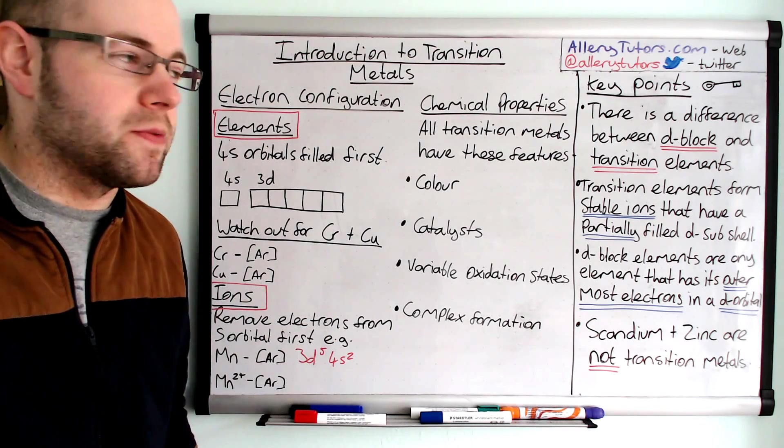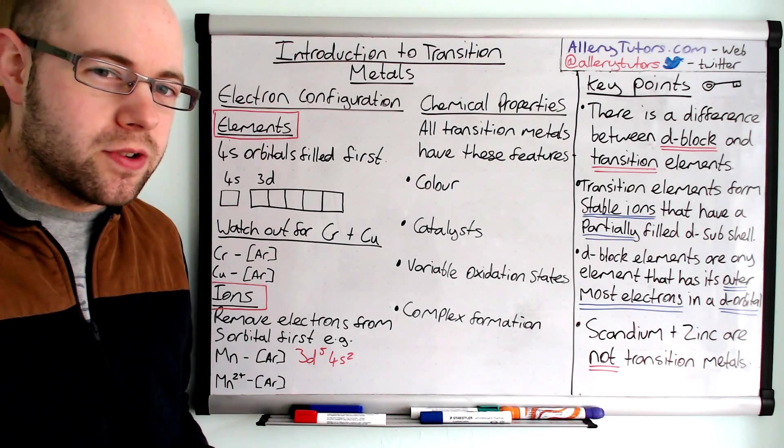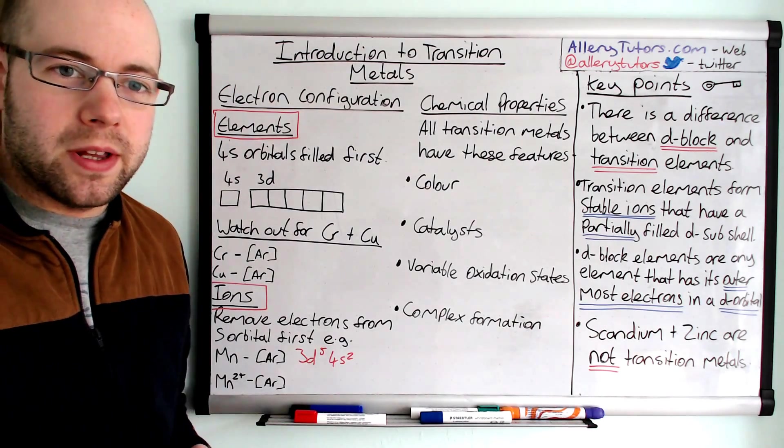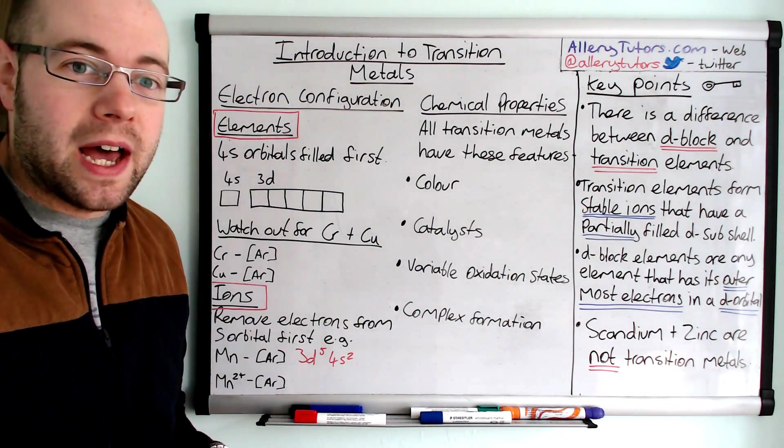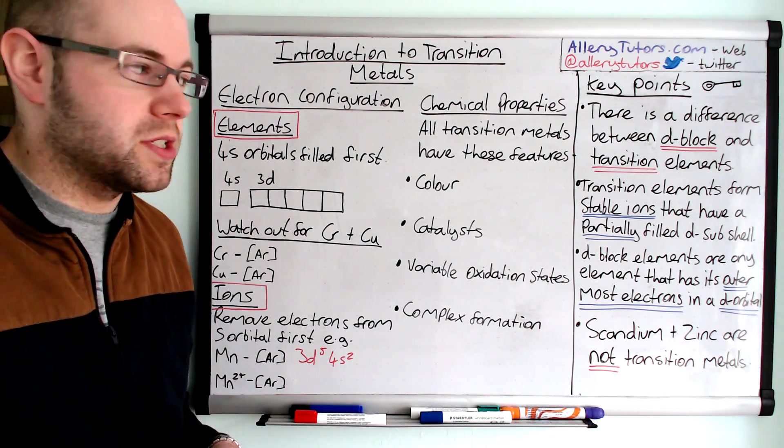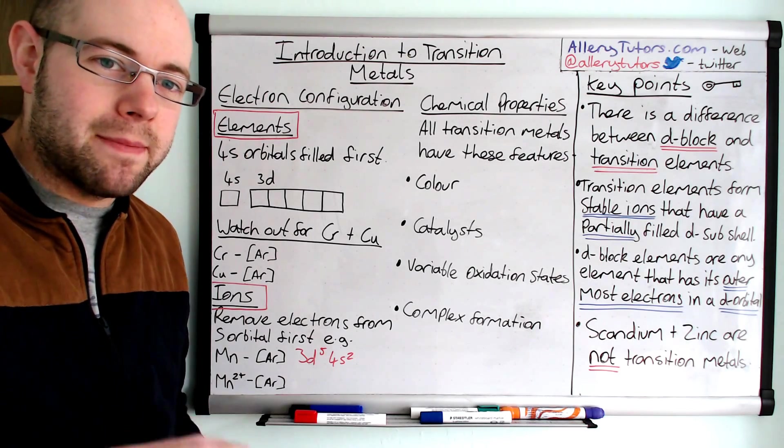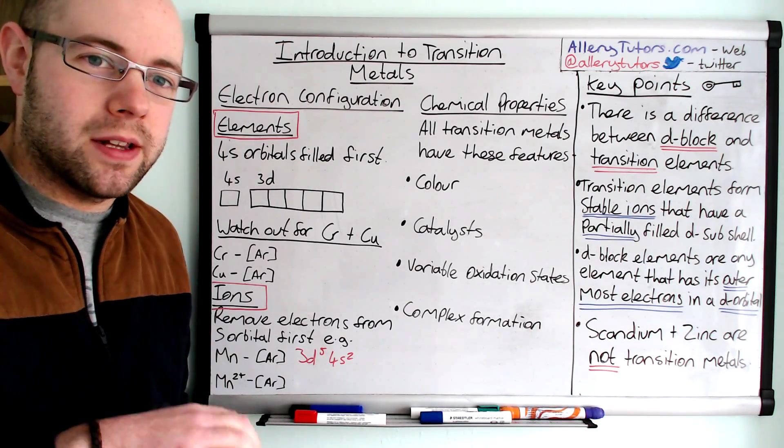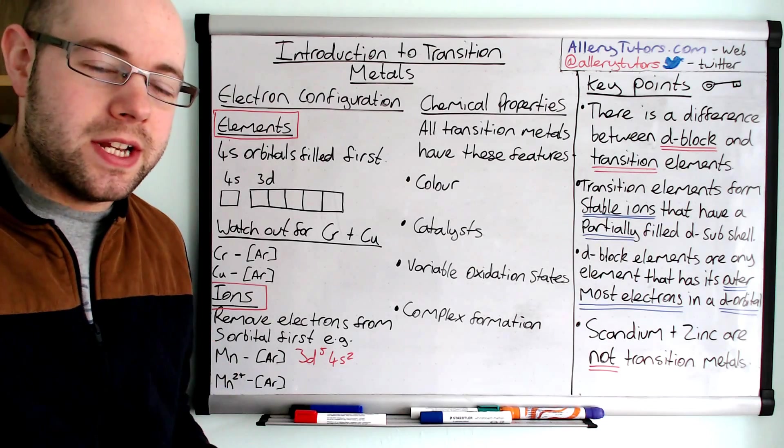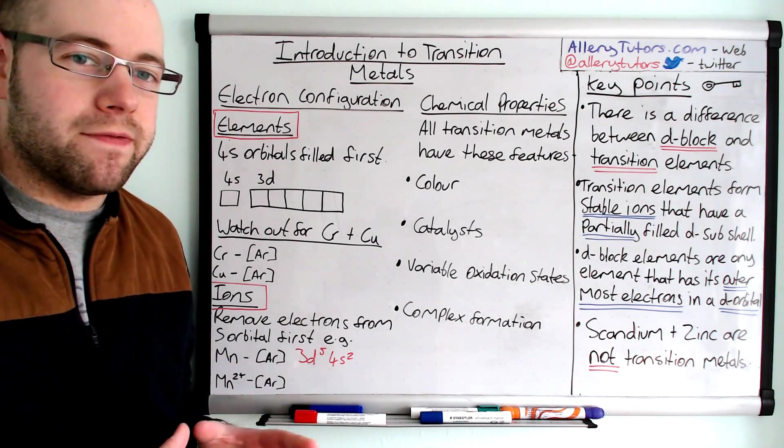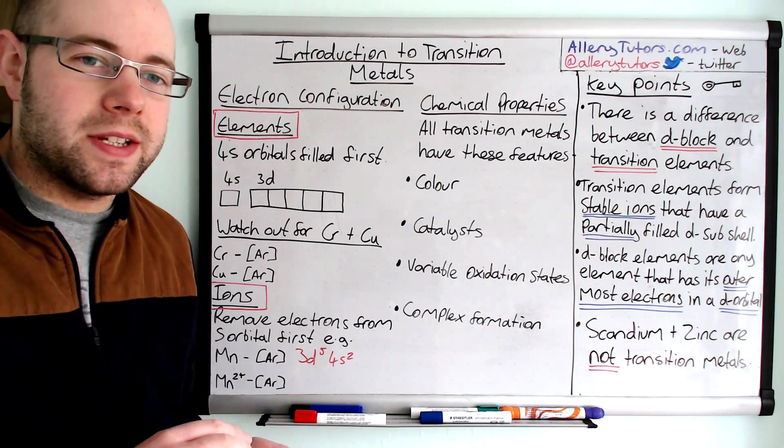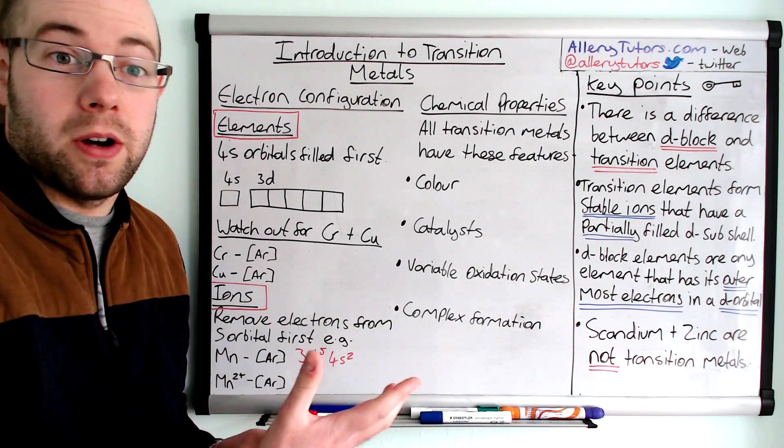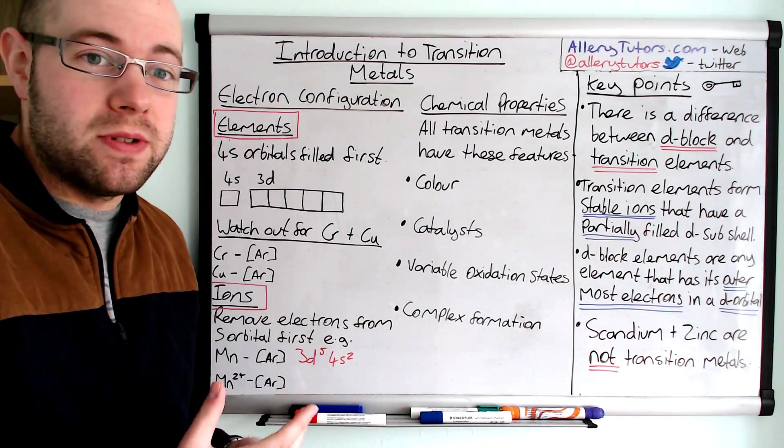On the right-hand side there, we can see that we've got the difference between a D-block element and a transition element. You've got to know the difference between these two. Essentially, a transition element is defined as something that forms a stable ion that will have a partially filled D-sub shell. And the ion bit is important. We're not talking about the elemental version of the transition metal that has a partially filled D-sub shell, it's the ion. And this is different to what we call a D-block element, where this is any element that would have its outermost electrons, in other words the highest energy level, that occupy D-block or occupy a D-orbital.